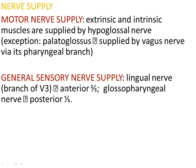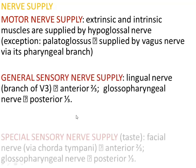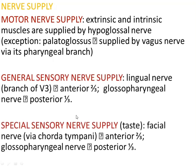For special sensory nerve supply — that means taste — the facial nerve through the chorda tympani supplies the anterior two-thirds of the tongue. Then the glossopharyngeal nerve supplies the posterior one-third of the tongue.